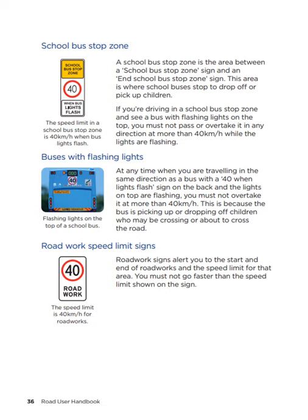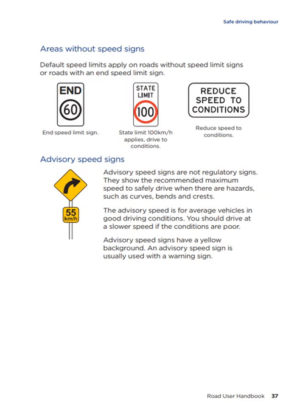Road work speed limit signs alert you to the start and end of road works and the speed limit for that area — you must not go faster than the limit shown. Default speed limits apply on roads without speed limit signs or roads with an end speed limit sign. Advisory speed signs are not regulatory signs. They show the recommended maximum speed to safely drive when there are hazards such as curves, bends and crests. The advisory speed is for average vehicles in good driving conditions — you should drive slower if conditions are poor. Advisory speed signs have a yellow background and are usually used with a warning sign.